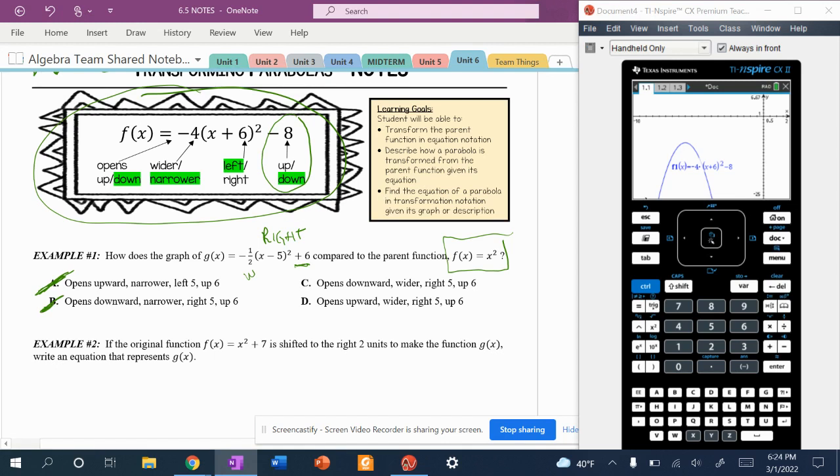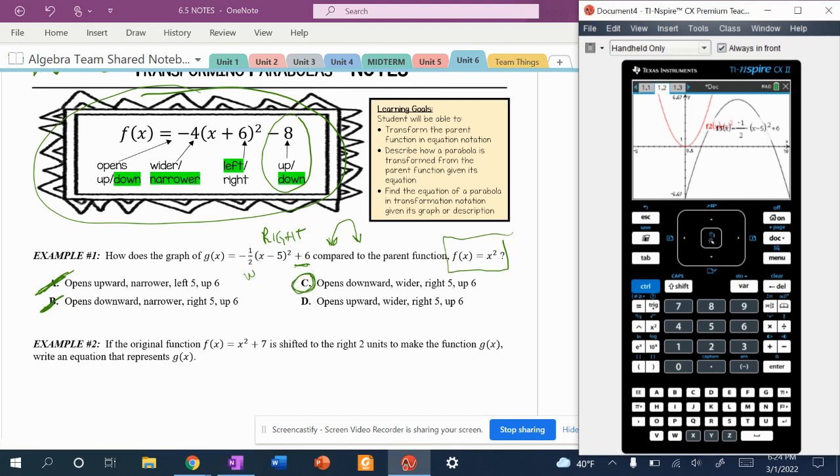Well, let's think about this. It's negative. So if it's negative, the parabola must be going the wider side or must be opening going down, right? And if it's opening going down, it must be C. And just to show you, I did in the graphing calculator, I plugged them in both. If you look, the red one is your x² and your black function is going to be your G(x), which is -(1/2)(x - 5)² + 6.